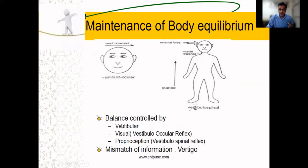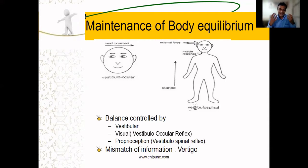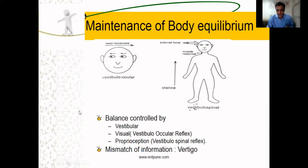One is the vestibular cause — meaning the ear or inner ear-related input. Then there are visual receptors: the coordination between the eyes and ears, called the vestibulo-ocular reflex. Then there is proprioception — that is the position of the feet — which via the vestibulospinal tract sends information to the brain.